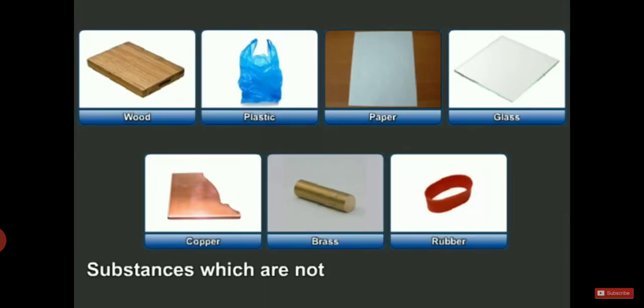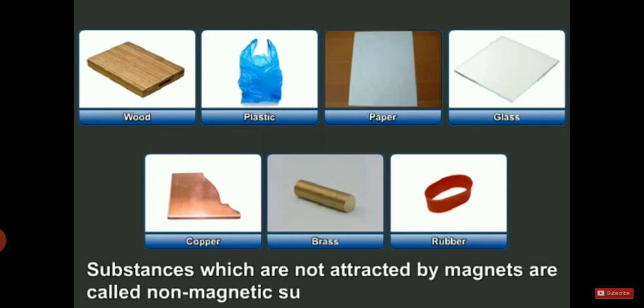But there are some other metals or substances that cannot be attracted to magnets, such as wood, plastic, paper, glass, copper, brass, and rubber. These materials are called non-magnetic materials.